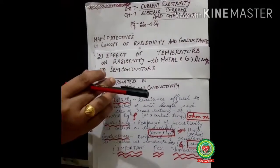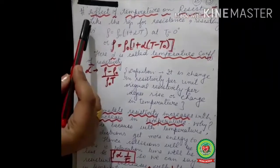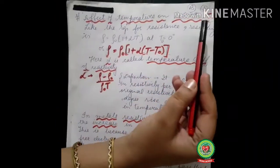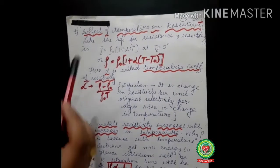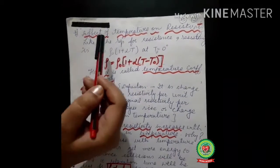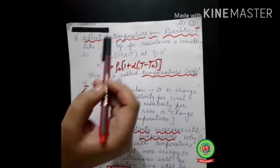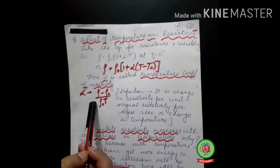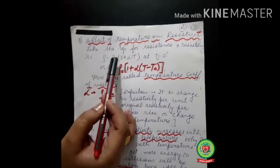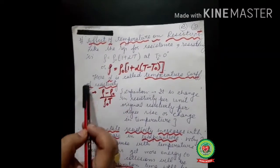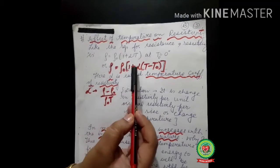Now let's shift towards the next topic: effect of temperature on resistivity. This is a very important topic. Just as we studied the effect of temperature on resistance, the same applies to resistivity — we simply write rho instead of R. The formula becomes: rho = rho-naught times (1 + alpha(T − T-naught)).